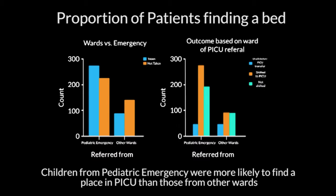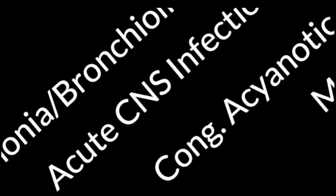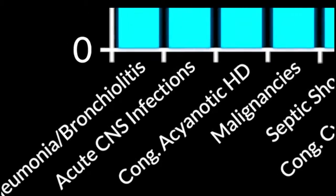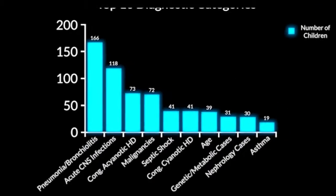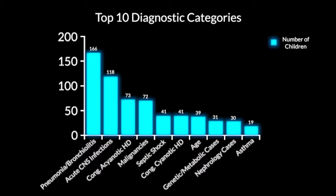Among patients that come in with different diagnostic categories, this reflects the number of patients we ordinarily see — patients with respiratory tract infections, patients with CNS infections. But all kinds of ICU conditions, including those following gastroenteritis and electrolyte imbalances, they come in.